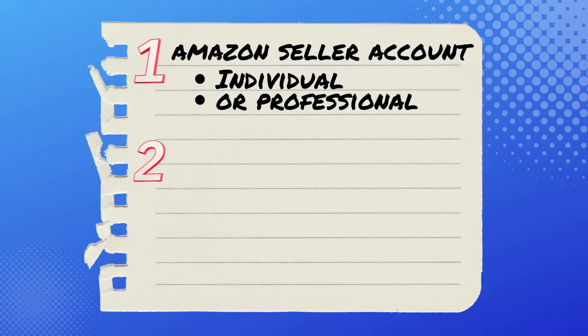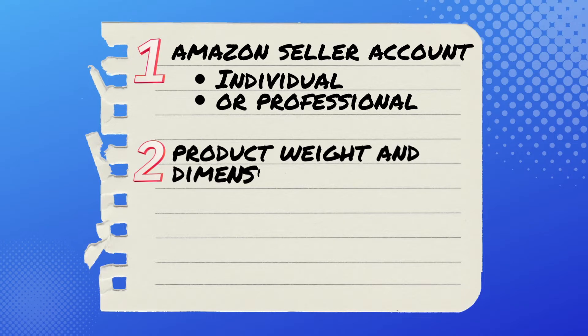Number two, you either need to know your product's weight and dimensions, or find a similar product in Amazon's catalog and copy the ASIN. The calculator will be able to pull that information from that ASIN for you. I will touch more on that when we get to that step in the calculator process.